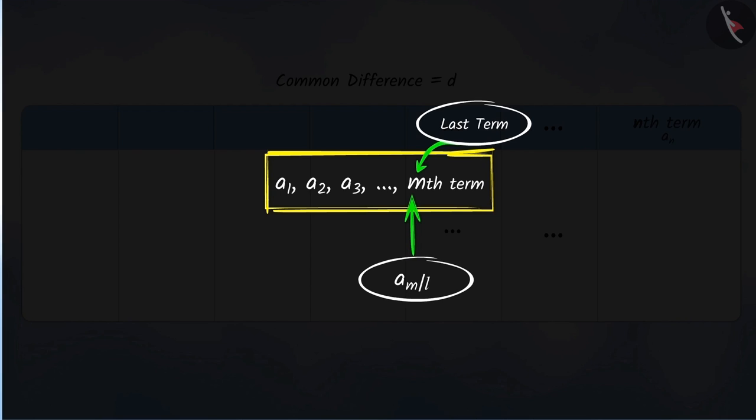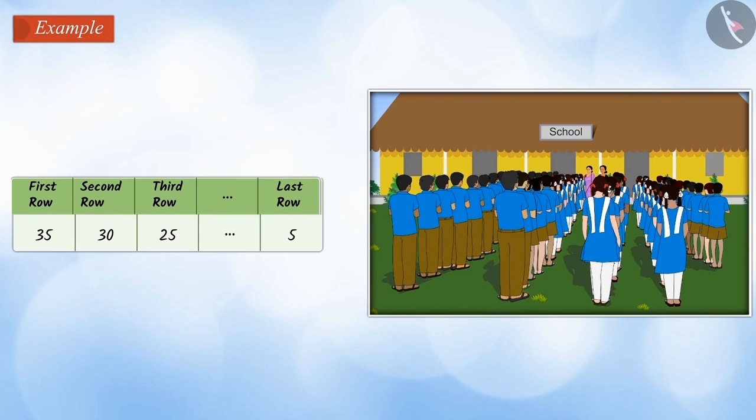Let's see an example. In a school ground, there are 35 students in the first row, 30 in the second row, 25 in the third row, etc. It has 5 students in the last row. How many rows of students are there in the school ground?